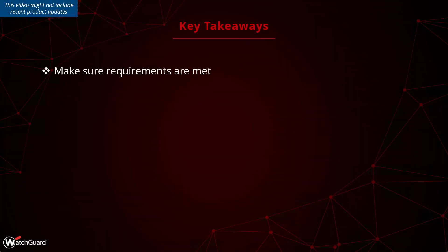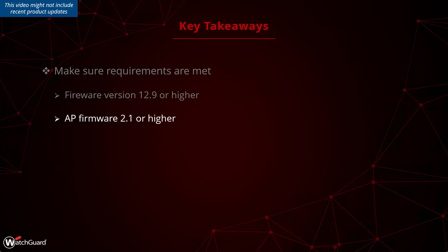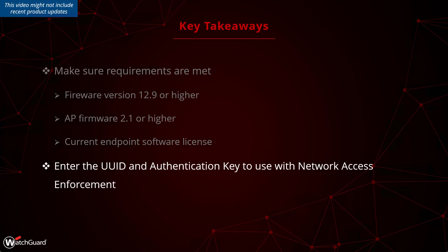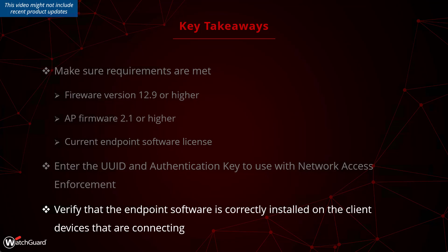To wrap things up, make sure all requirements are met for network access enforcement. This includes specific versions: 12.9 for the Firebox, 2.1 or higher for the AP, and the endpoint must be updated with current licensing. You need to enter the UUID and authentication key in the endpoint configuration's network access enforcement section, as well as in the locally managed Firebox configuration. Finally, verify that the endpoint software is correctly installed on any client devices connecting to the network — if it's not, the check will fail and the client may not be able to pass traffic. For more information, check out WatchGuard Technical Search.